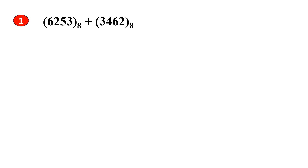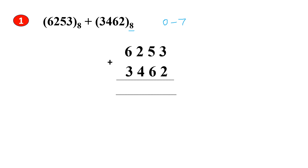Octal numbers are numbers from 0 to 7, so octal numbers have a base of 8. Let's solve the first problem. 3 plus 2 gives us 5; 5 lies between 0 to 7 so it's an octal number. Next, 5 plus 6 gives us 11. 11 is not an octal number because it does not fall between 0 to 7, so we divide 11 by 8: quotient is 1 and remainder is 3. So 3 becomes the sum and 1 becomes the carry.